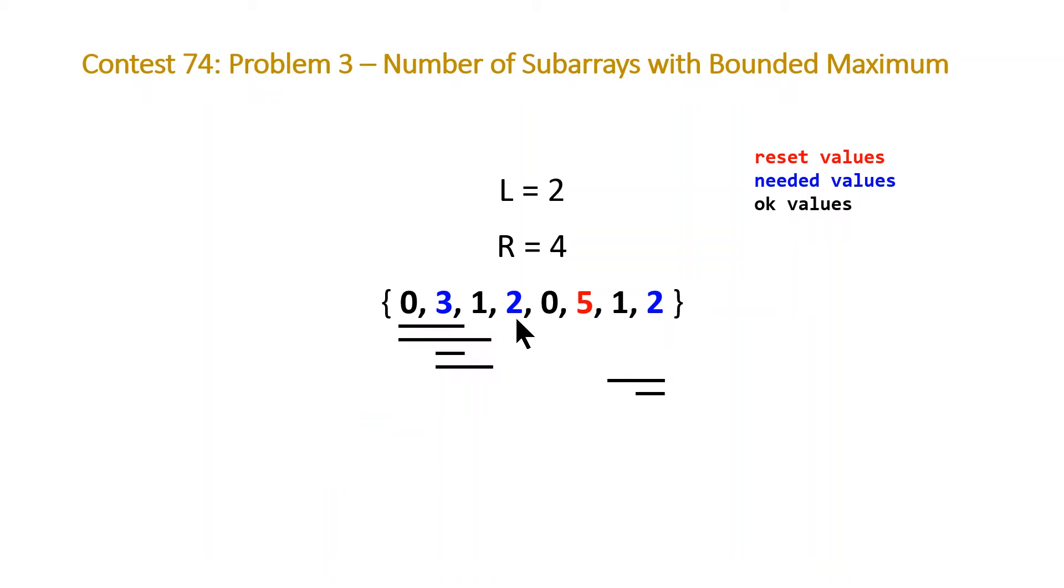When we hit this two, we're going to need to increase the number of subarrays. But at this point, we have a prefix here, possible prefixes of 0 and 3. So that gives us these two subarrays right here. When we move to the 1, we're just doubling the count of that prefix for an okay value. But when we move to another needed value...